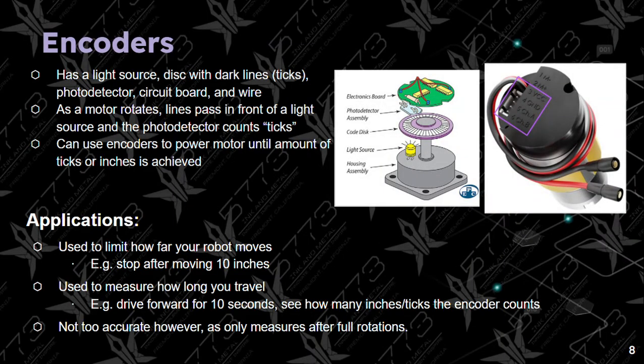The next sensor is the encoder. It consists of a light source, a disk with dark lines or ticks, a photodetector, a circuit board, and wire. As the motor rotates, lines pass in front of the light source and the photodetector counts ticks. We can use these ticks — we can use encoders to power a motor until a certain amount of ticks or inches are achieved.